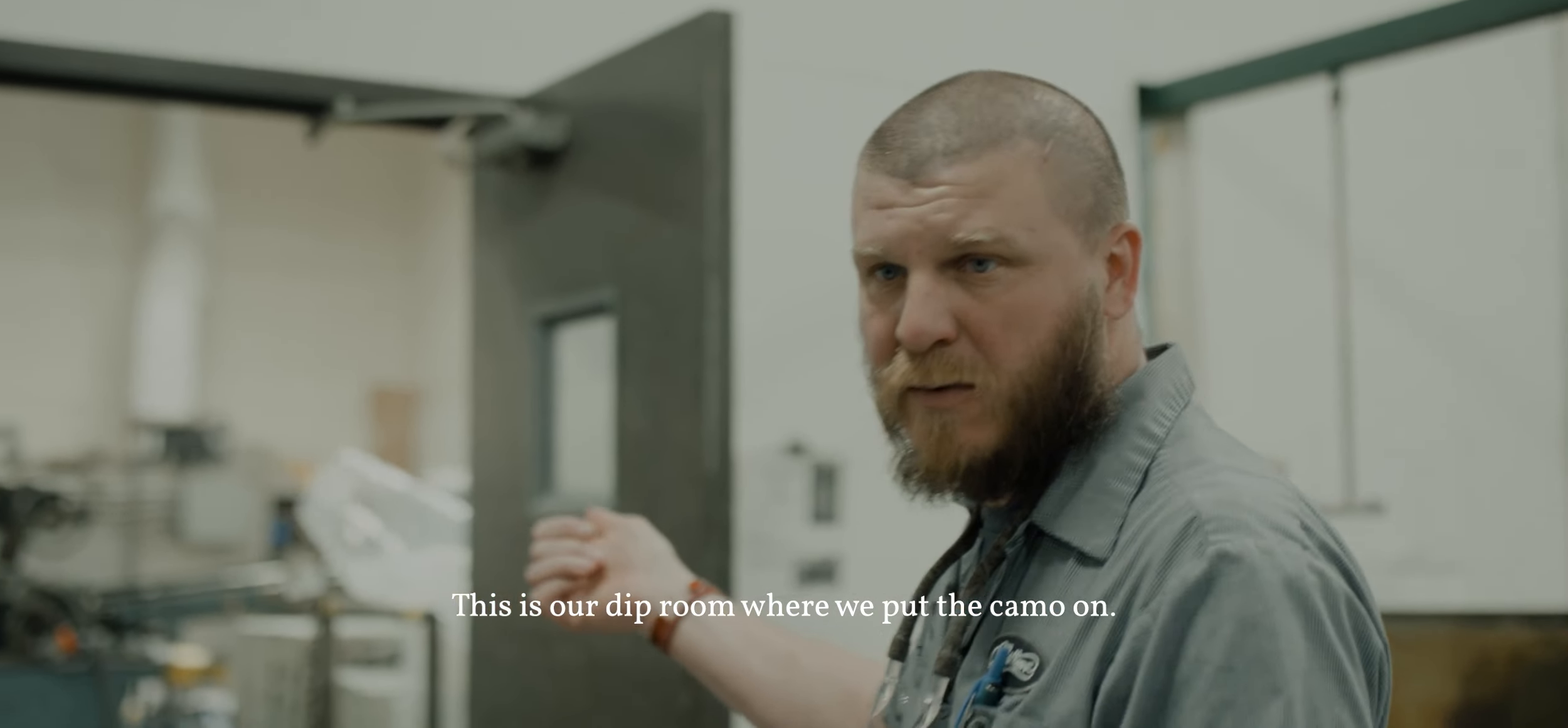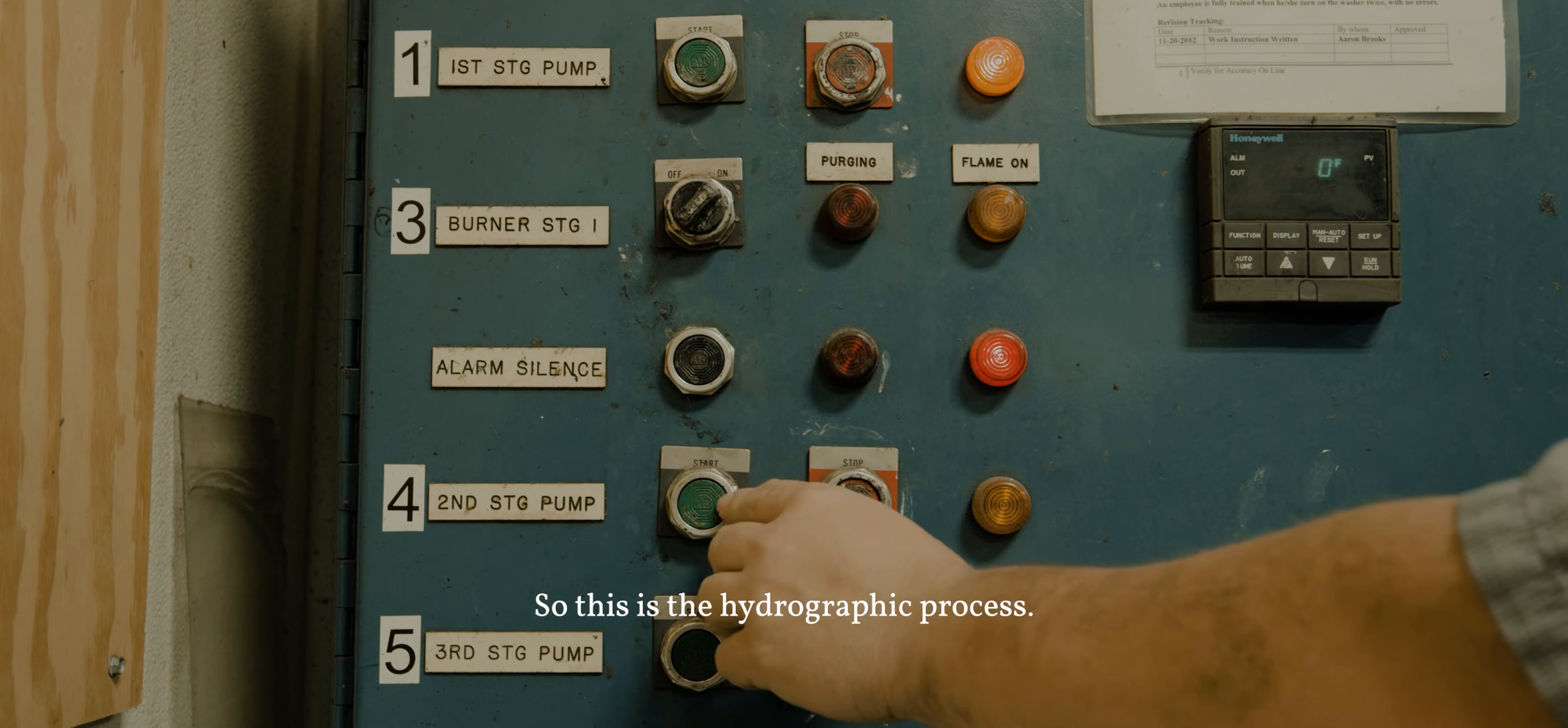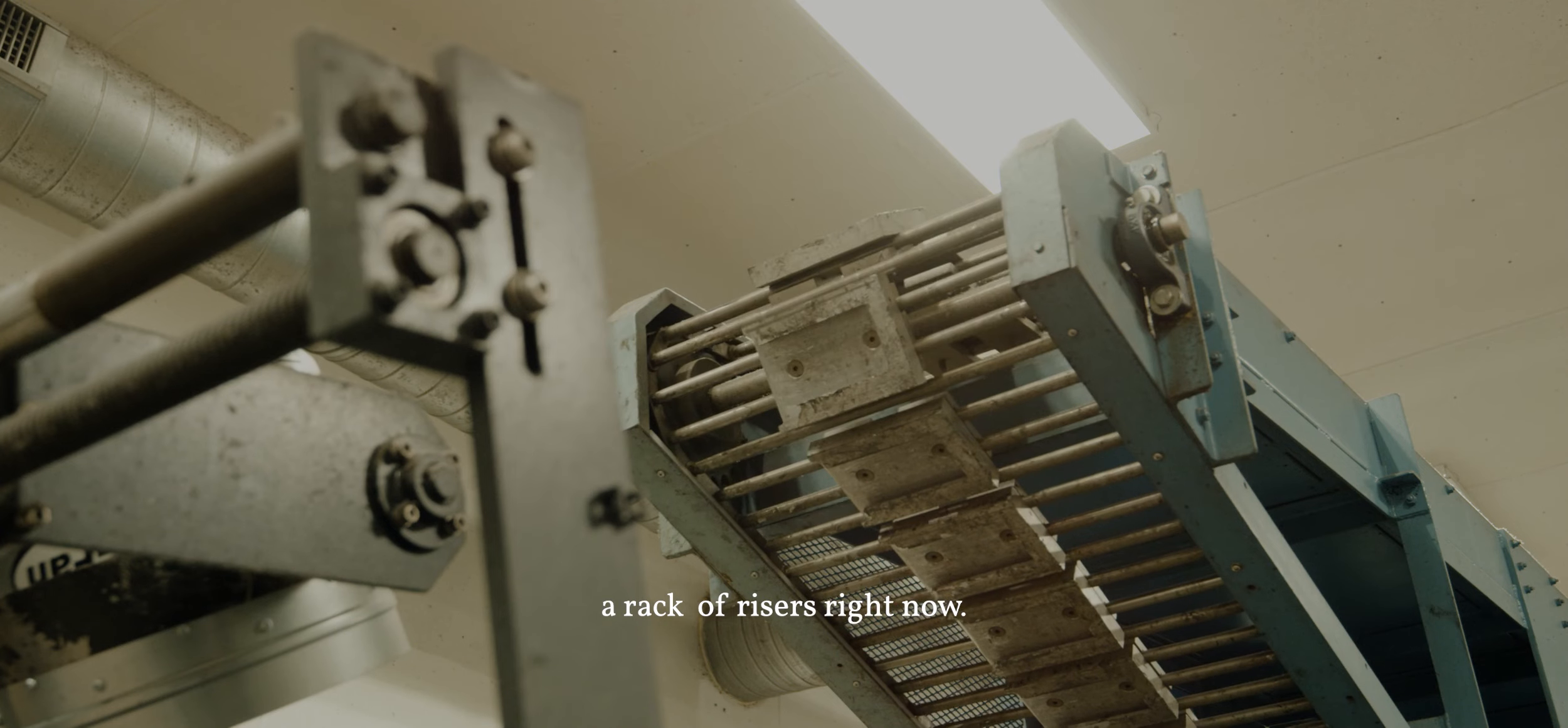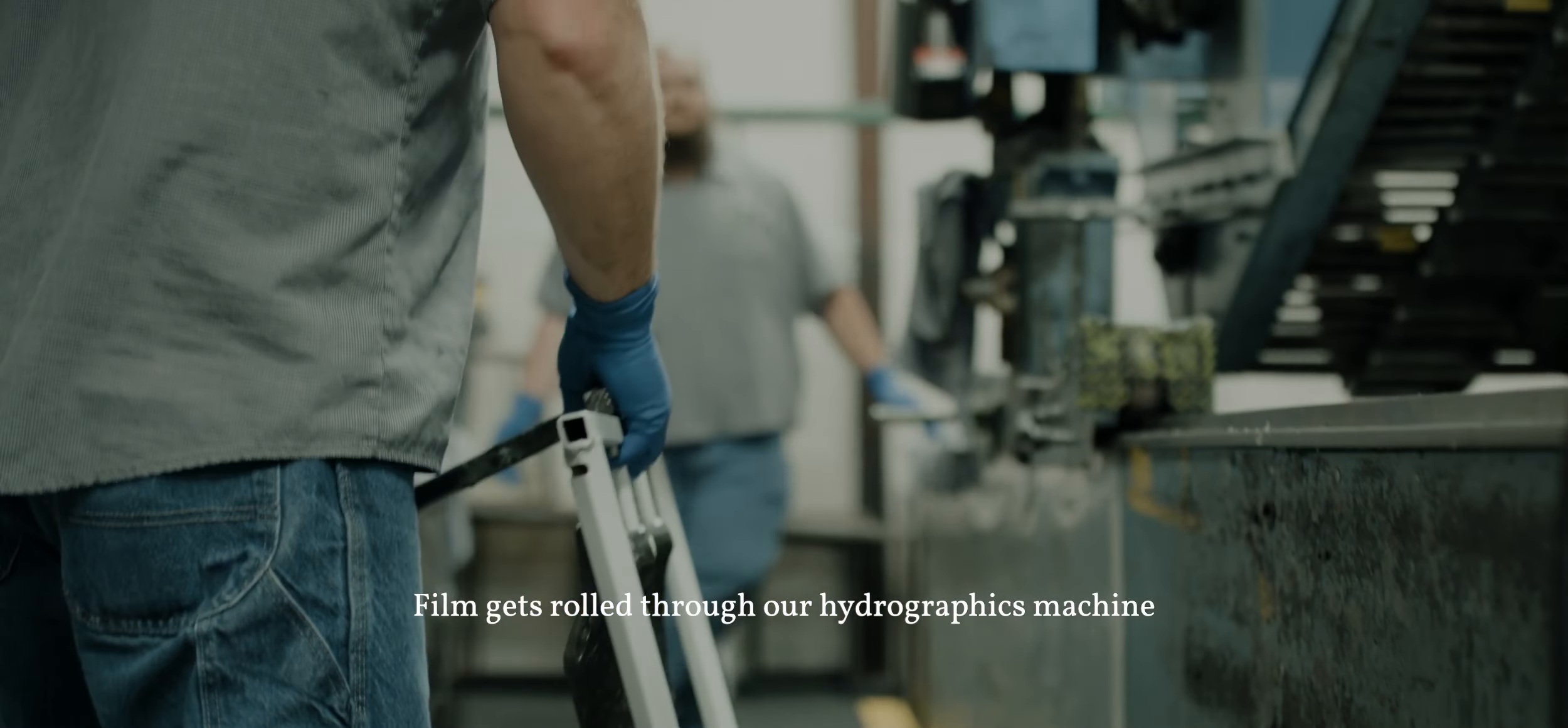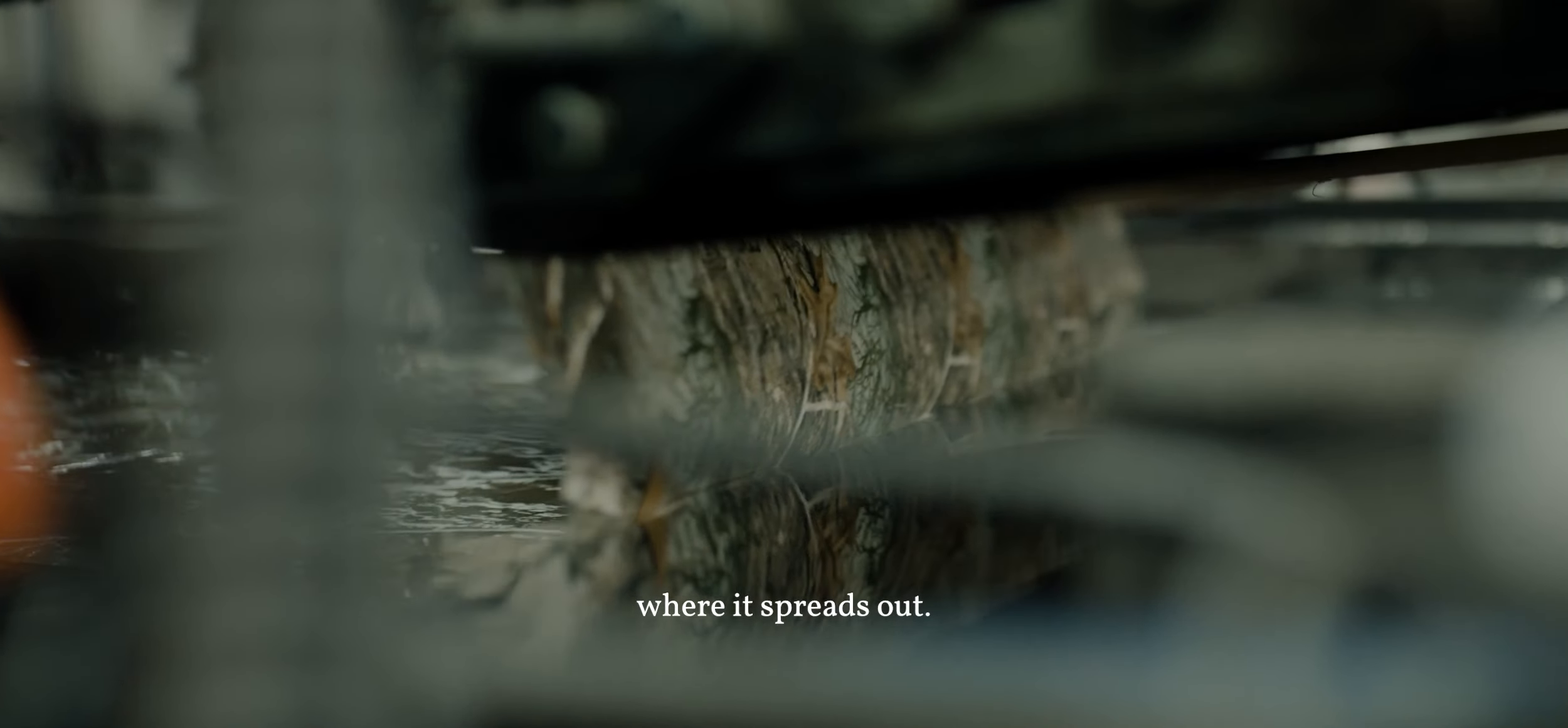This is our dip room where we put the camo on. So this is the hydrographics process. Matt's getting ready to load up our rack of risers right now. The film gets rolled through our hydrographics machine, comes down on the water where it spreads out.